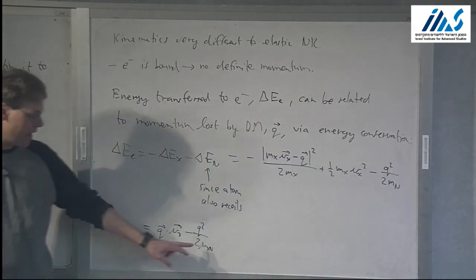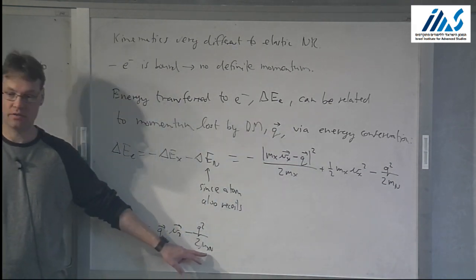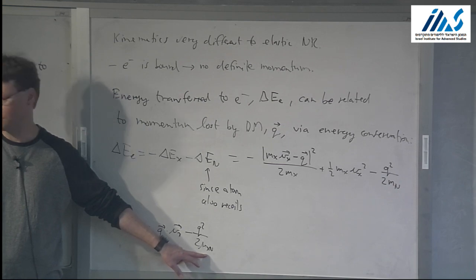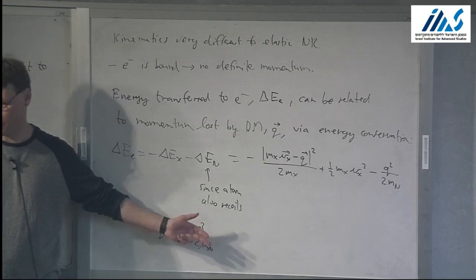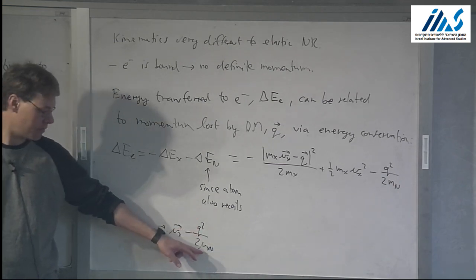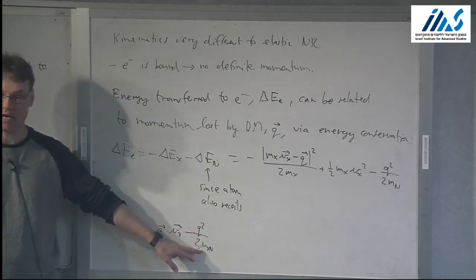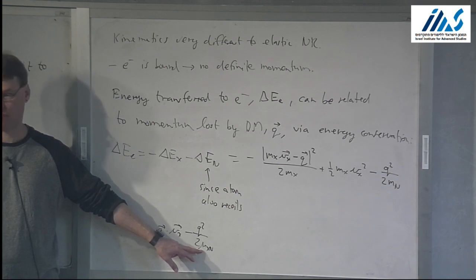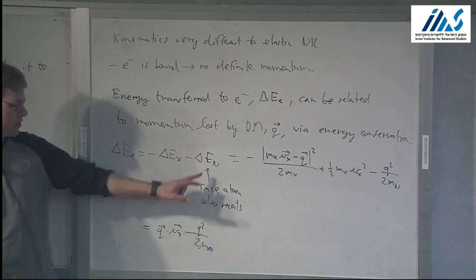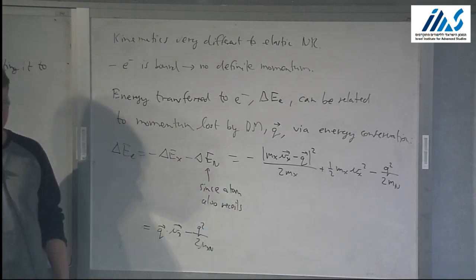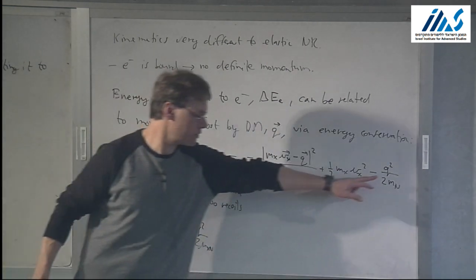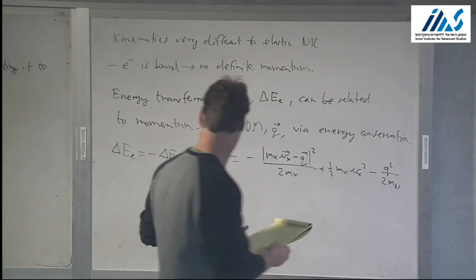If the dark matter mass is much less than the nuclear mass — which is what we're assuming here for sub-GeV dark matter — the reduced mass will just be M_chi. That's the same as just neglecting that nuclear recoil term.